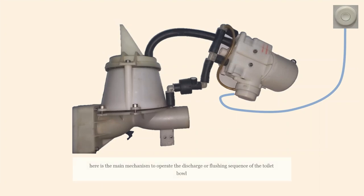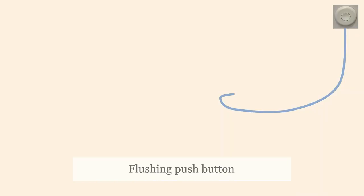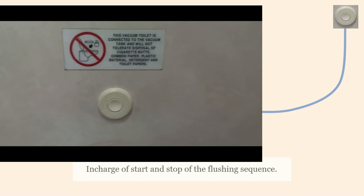Here is the main mechanism to operate the discharge or flushing sequence of the toilet bowl. The flushing push button is in charge of starting and stopping the flushing sequence.